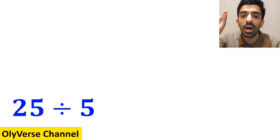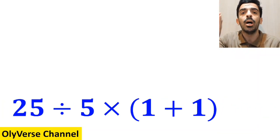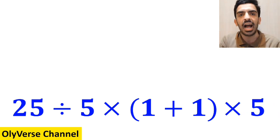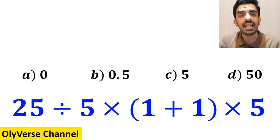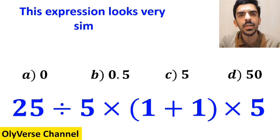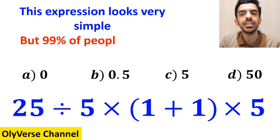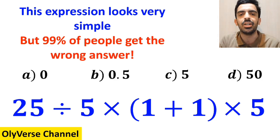What is the value of the expression 25 divided by 5 multiplied by open parenthesis 1 plus 1 close parenthesis then again multiplied by 5? Which option do you think is the correct answer to this question? This expression looks very simple but 99% of people get the wrong answer.